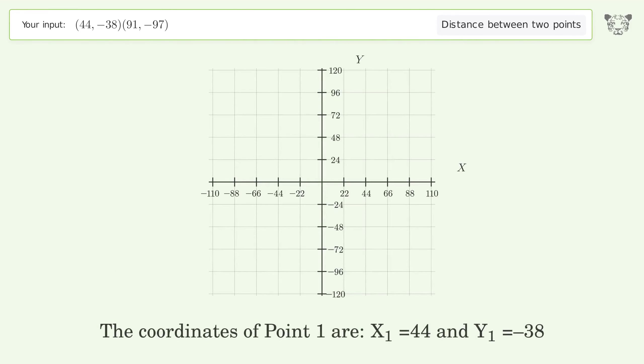The coordinates of point 1 are x1 equals 44 and y1 equals negative 38. The coordinates of point 2 are x2 equals 91 and y2 equals negative 97.